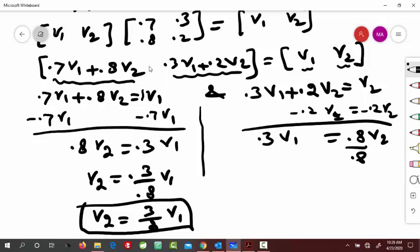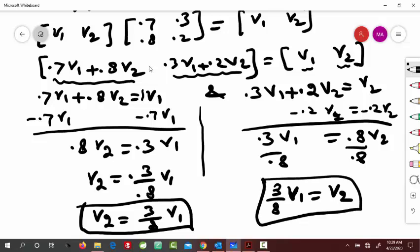So, if you want to write it in terms of v2, so divide by 0.8, divide by 0.8, so you got, like, say, 3 by 8v1 is equal to 2. So, basically, this equation is the same as this one, right?